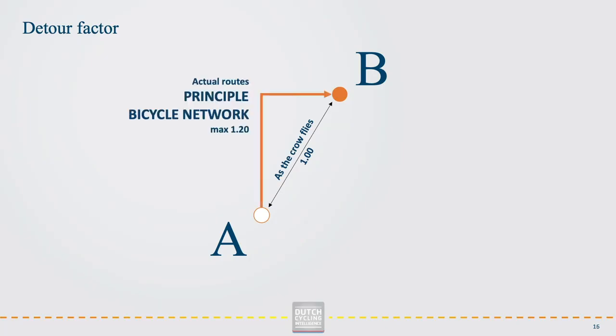For the principle bicycle network, the minimum ambition should be to having an average detour factor of about 1.20. For other parts of the network, 1.30 to 1.40 is acceptable.